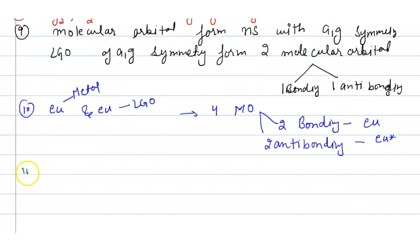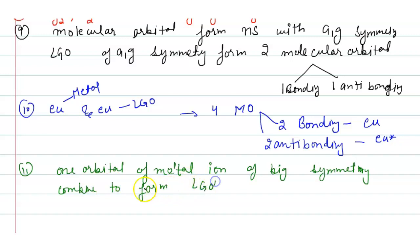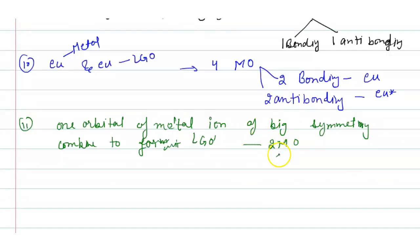Next, the b1g orbital of the metal ion combines with the LGO of b1g symmetry to form two molecular orbitals: one bonding and one anti-bonding.